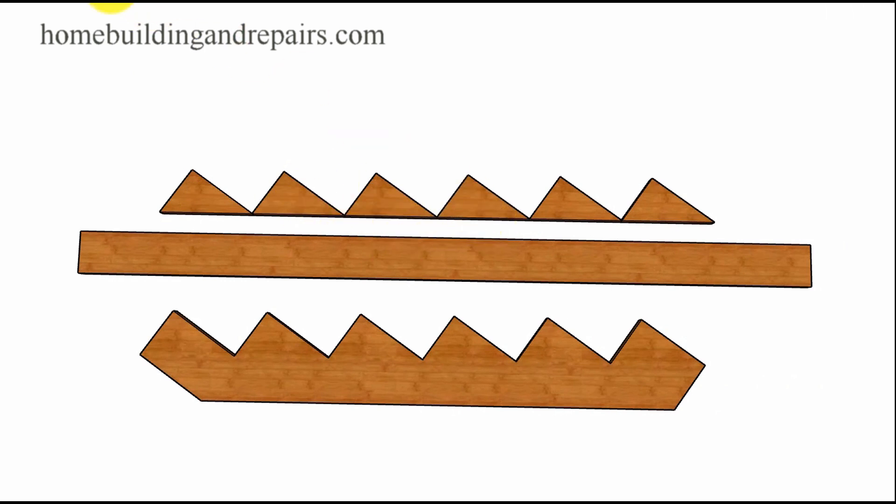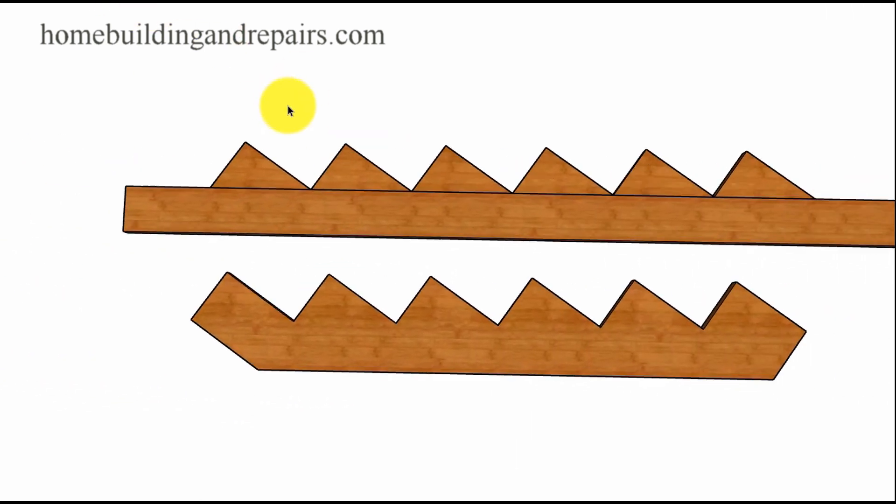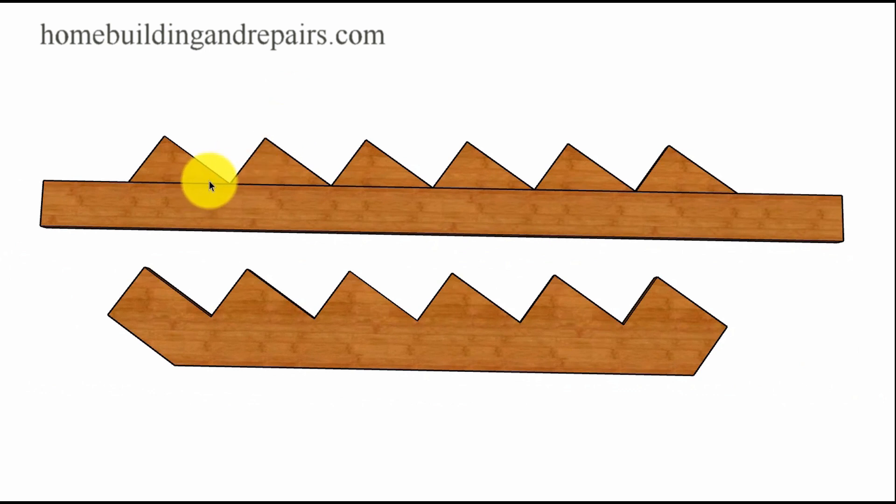You can kind of see where we're starting to go with this. And nailed them or attached them somehow to the 2x6. Now we're starting to get something that looks like a stringer.